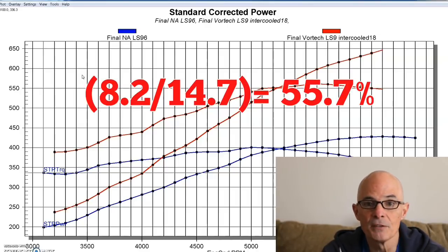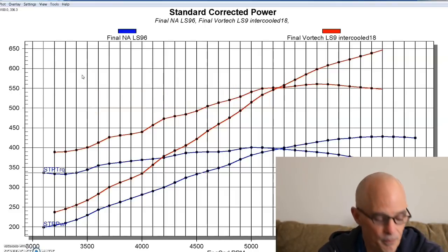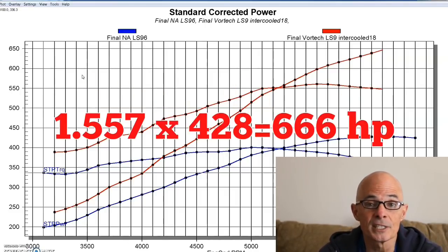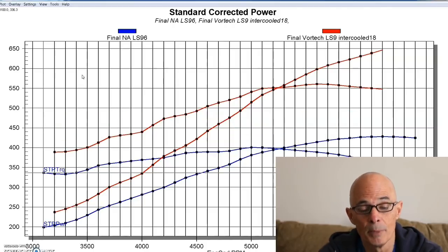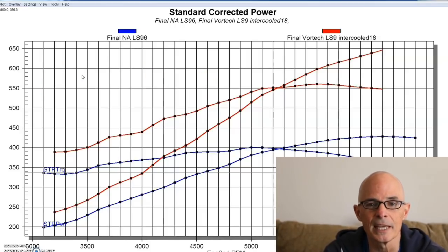And if we do the math, 8.2 pounds should give us a 55.7% increase in power. That would bring it to 666 horsepower. But in this case, at 8.2 pounds, the combination produced 647 horsepower, which is only about a 50% gain in power at that 8.2 pounds.